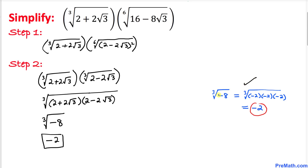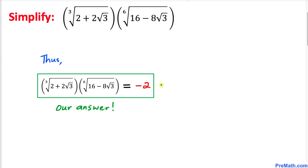The cube root of negative 8 is simply negative 2. Here's the justification: negative 8 can be written as negative 2 times negative 2 times negative 2, so the cube root is negative 2. That's our simplified answer: negative 2. Thanks for watching, and please don't forget to subscribe to my channel for more exciting videos.